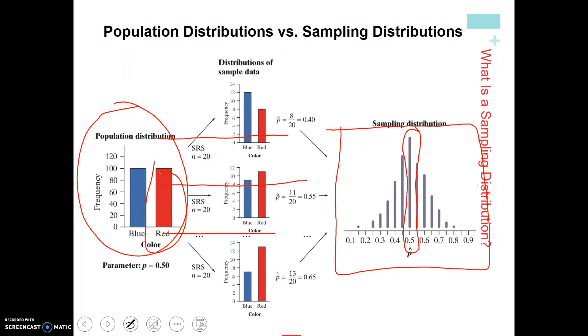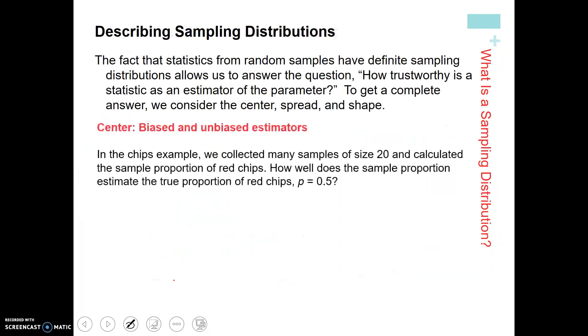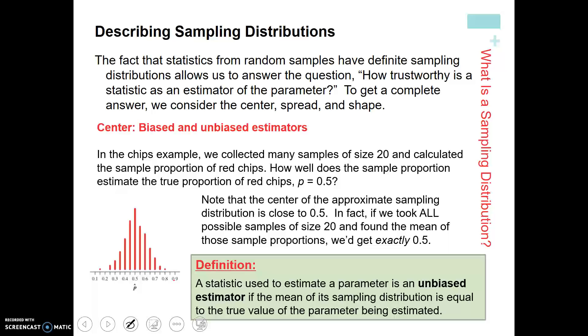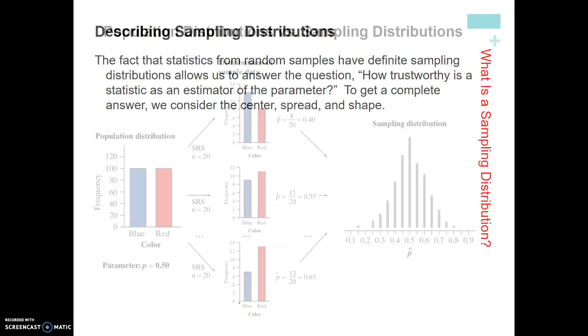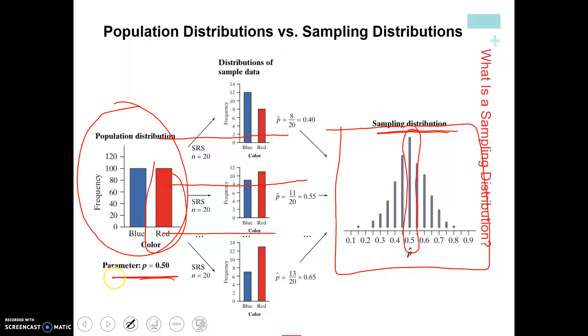So when we take a sampling distribution, if the sampling distribution or how we're taking the samples is correct, it should match the exact parameter that we had before. So it's actually a good estimation. We're going to say that this sampling distribution is an unbiased estimator. If that is true, if the parameter that we get is exactly the same as the sampling distribution. So if x bar is the same as mu, we're going to say it's unbiased.